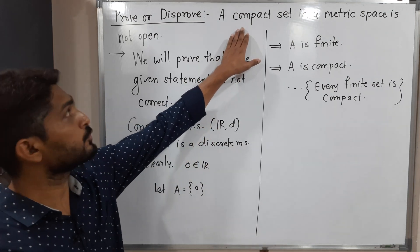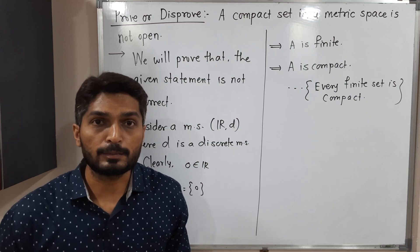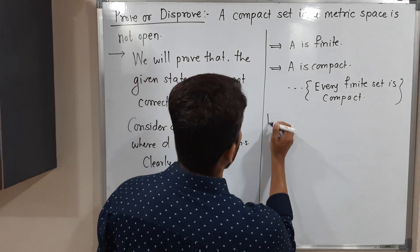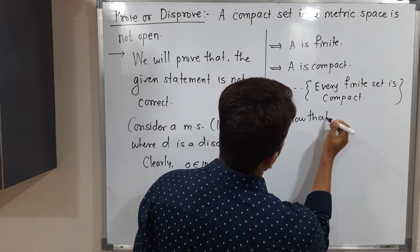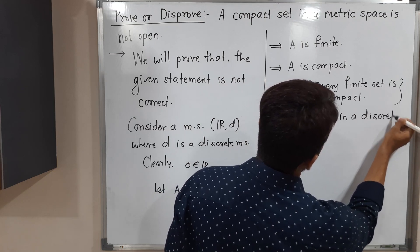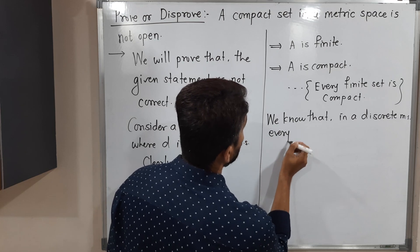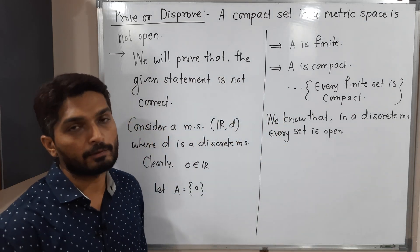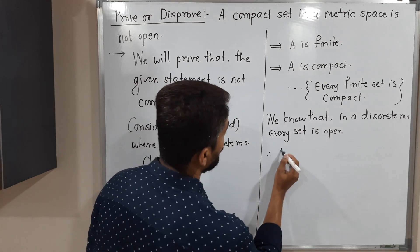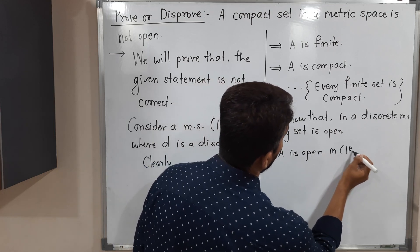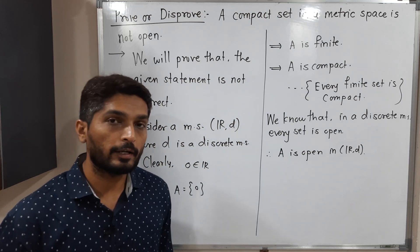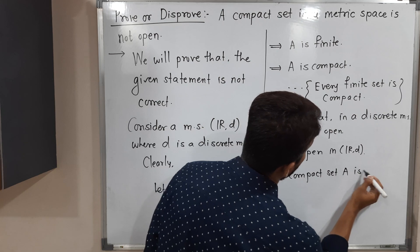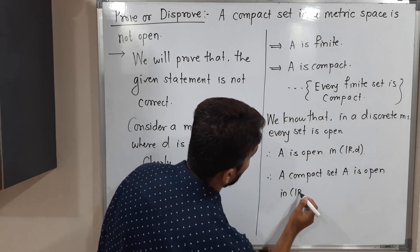Now let us talk about whether that set is open or not. We have already seen that in a discrete metric space, every set is both open and closed. So we can use that result and say A is also open. We know that in a discrete metric space, every set is open. Therefore, A is open in (R, D). So we got a set A which is compact and open also.